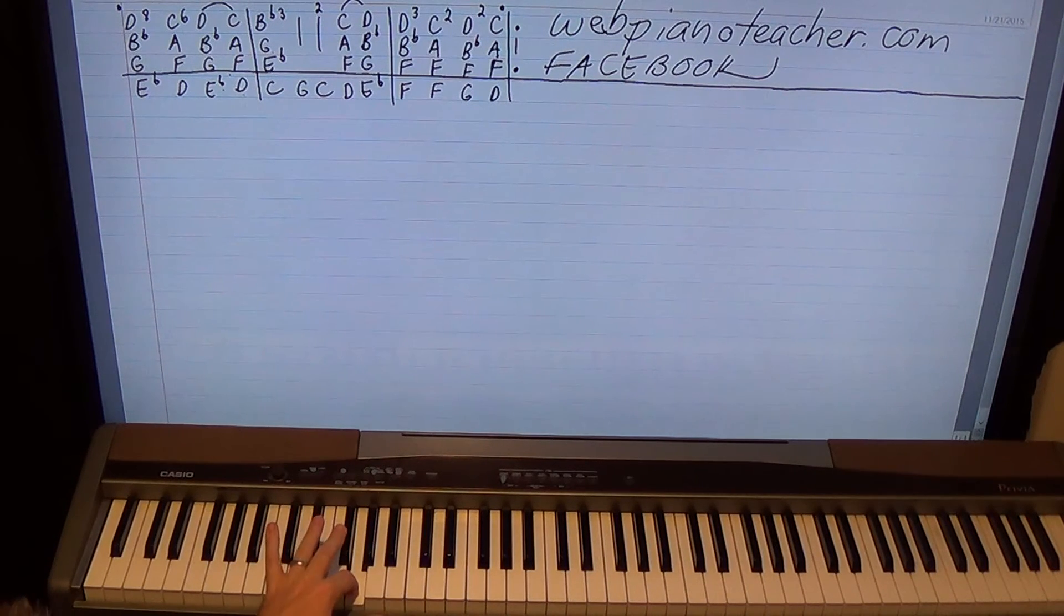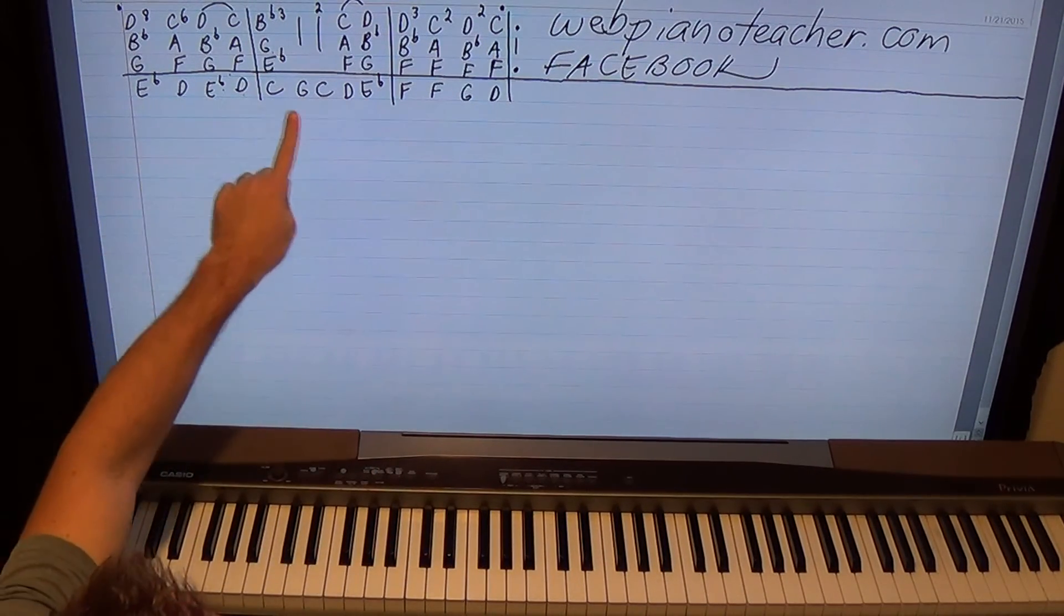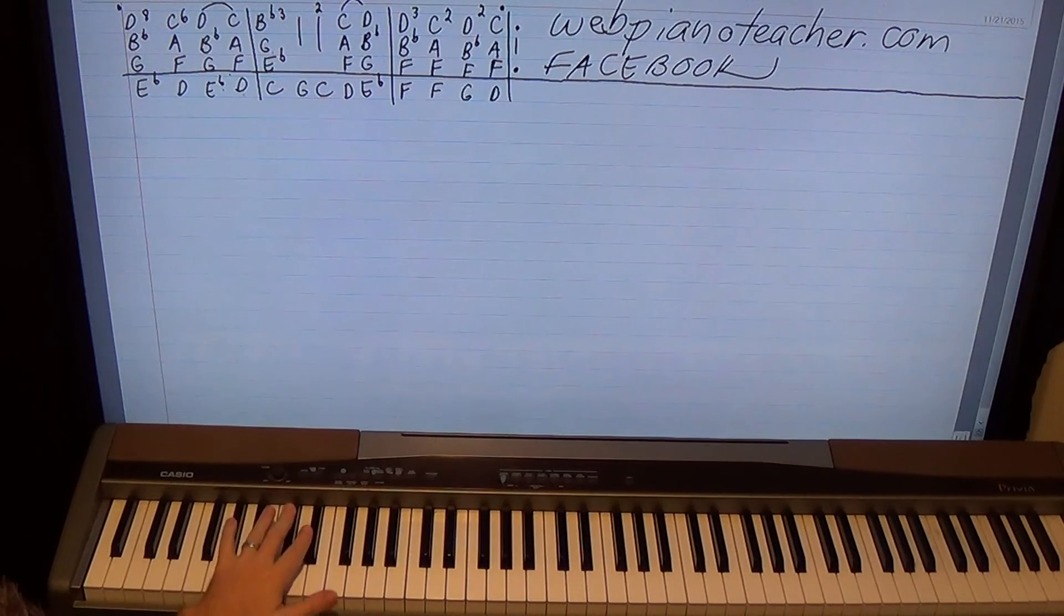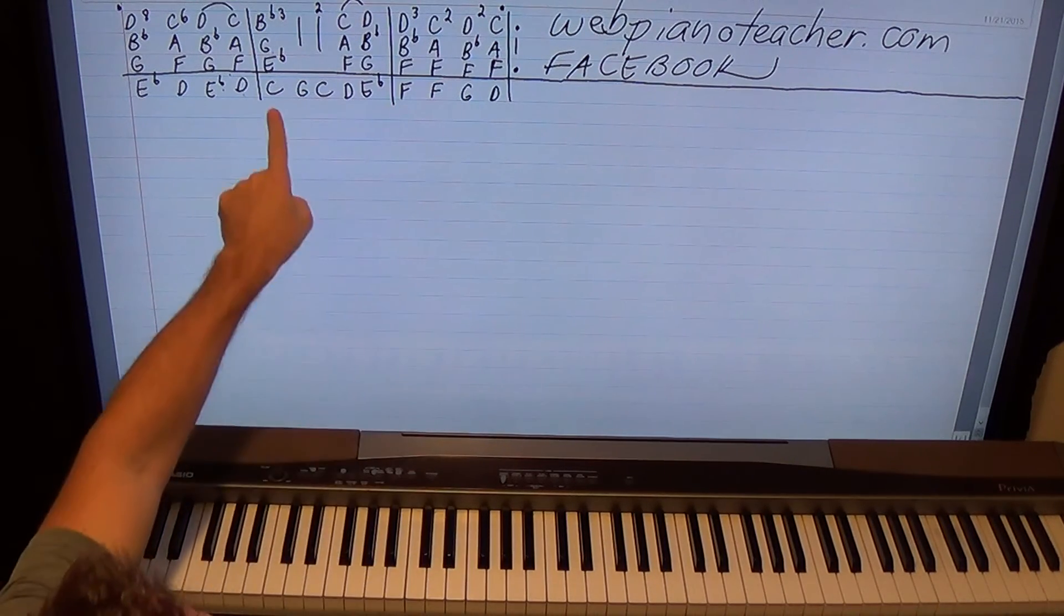So C octave, then a G. I'm just going to do a single G there, not a whole octave because that's too much. So I'm just going to do the G with my second finger and then do C octave again and two D flat octaves. And by the way, if any of the octaves are too hard, you can just reduce it down to a single note. That's what you want to do for that second measure.